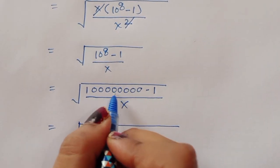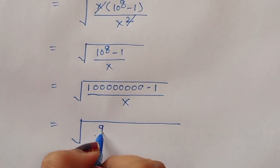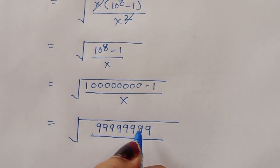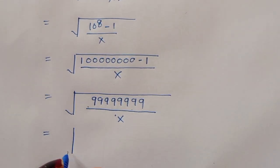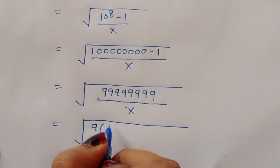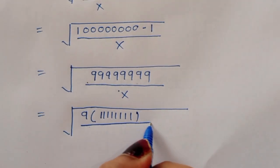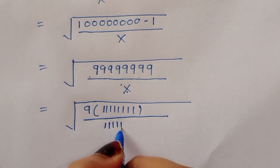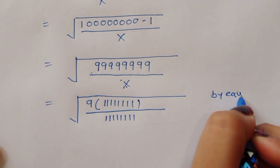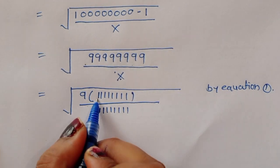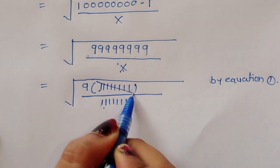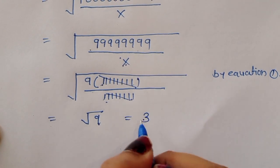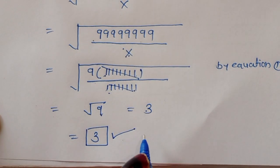When subtracting 1 from 10^8 we get 9 times 11111111. So we have 9 times 11111111 divided by x, and x equals 11111111 by equation 1. So 8 times 11111111 and 1 times 11111111 cancel, leaving square root of 9. Square root of 9 equals 3, so the value is 3. This is the solution — thank you!